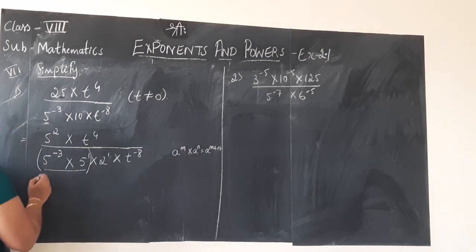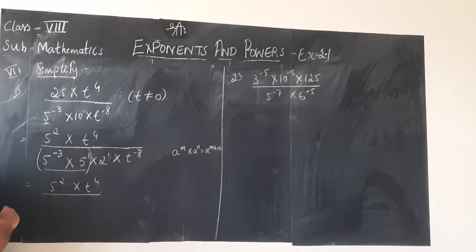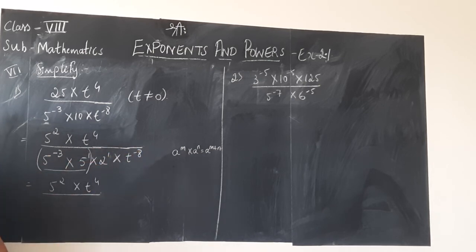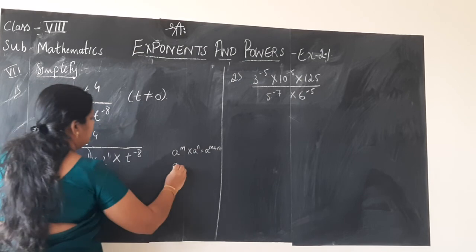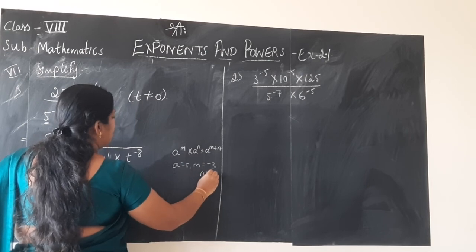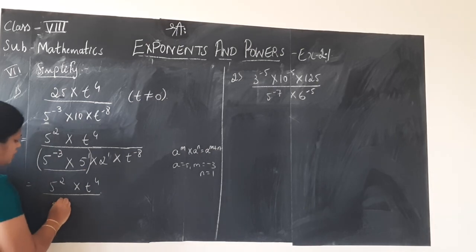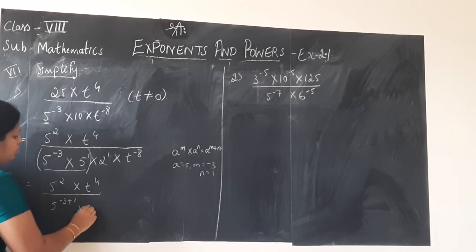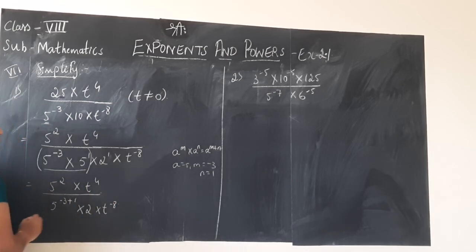So first I will simplify that. I will write the numerator terms 5 square into t to the power 4 as it is. Then 5 power minus 3 into 5 to the power plus 1 is of the form a to the power m into a to the power n, which equals a to the power m plus n. Where a is 5, m is minus 3, n is plus 1, so m plus n is minus 3 plus 1, giving us minus 2 — into 2 to the power 1 or simply 2, into t to the power minus 8 as it is.